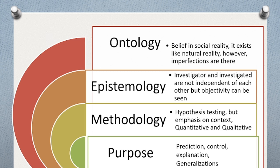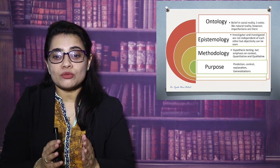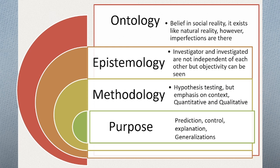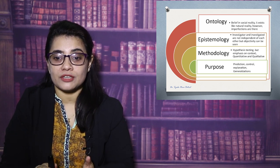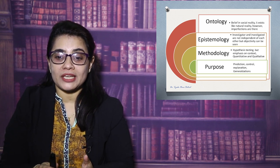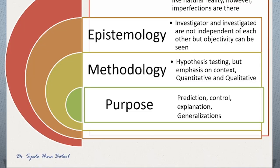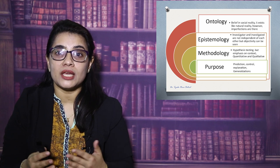The ontological belief of post-positivism is that social reality exists like natural reality, however imperfections are acknowledged. Their epistemology holds that the investigator and the investigated are not fully independent of each other, though objectivity can still be pursued. The methodology used is mixed — both quantitative and qualitative. They believe in hypothesis testing and consider the context of the research field. The purpose is prediction, control, explanation, and making generalizations from both types of data.